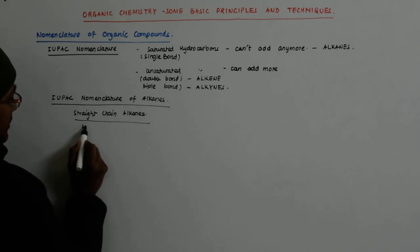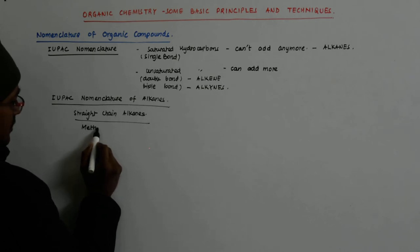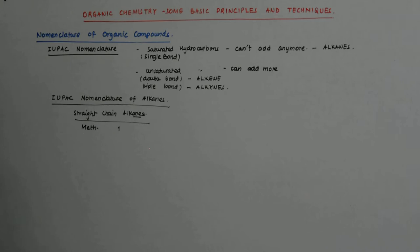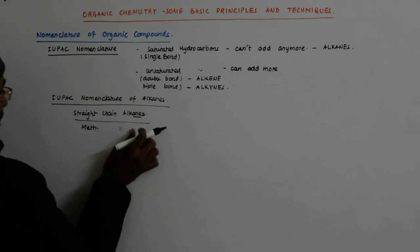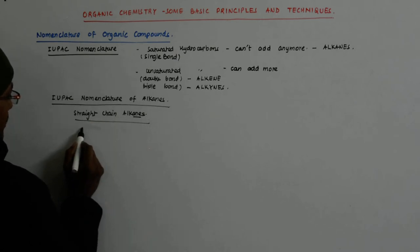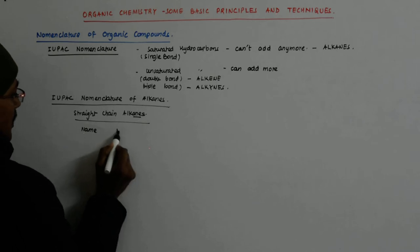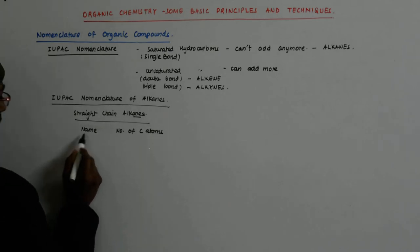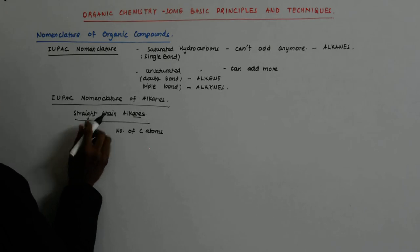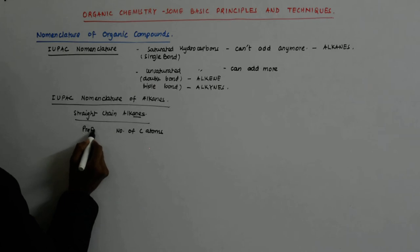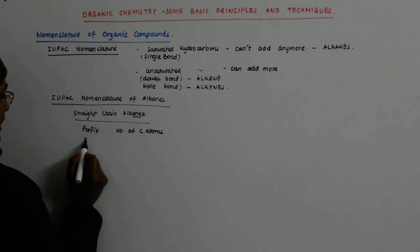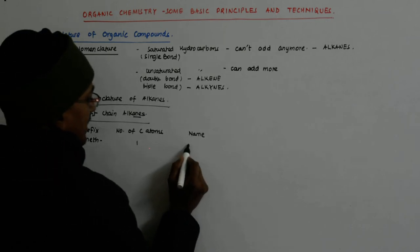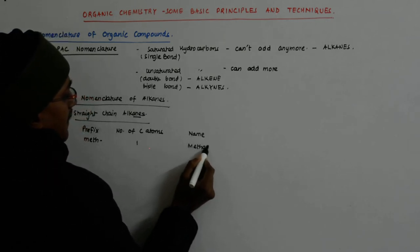And when you say meth, it means one. And the ane of the alkane comes in. What does it mean one? What does it signify? This is name. This is number of carbon atoms. If it is, I should not say name, it is a prefix. So, if the prefix is meth, then it is one. And the name is methane.